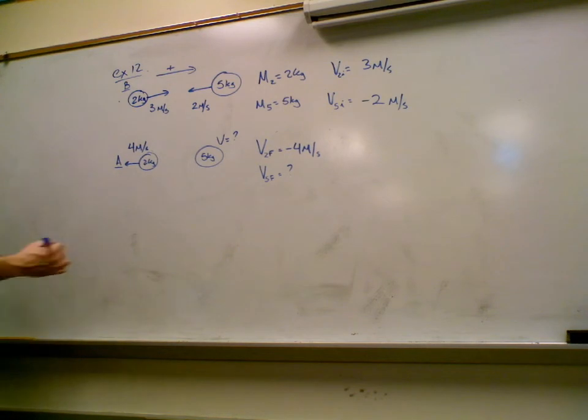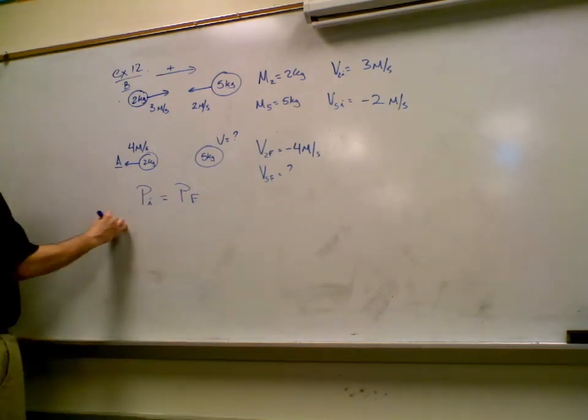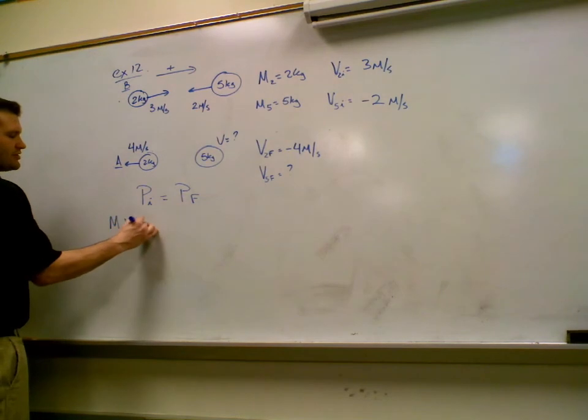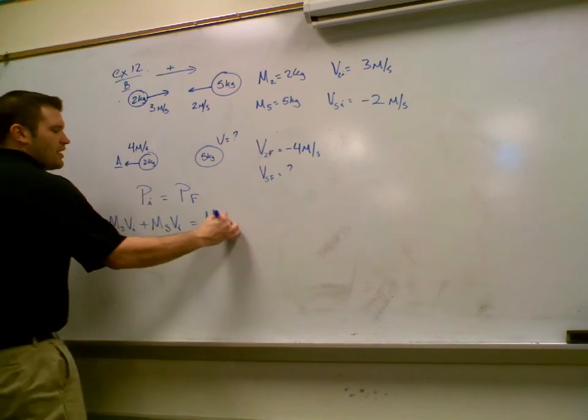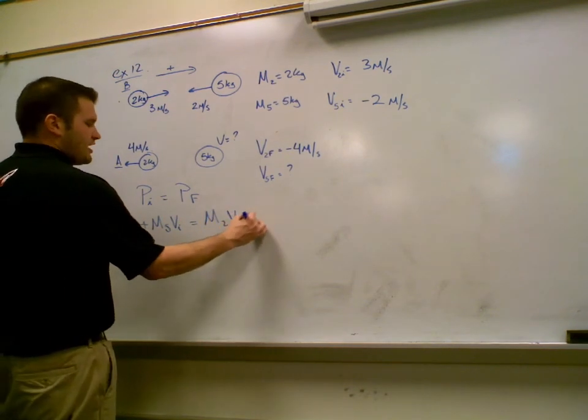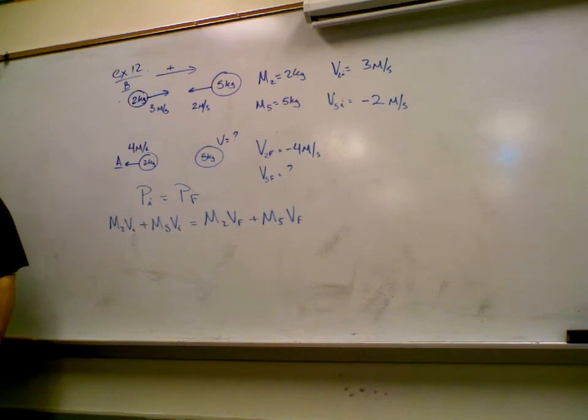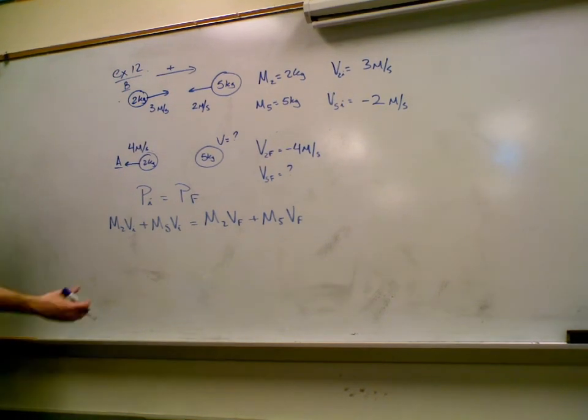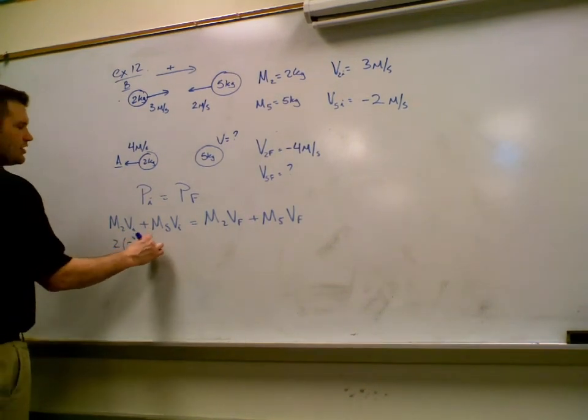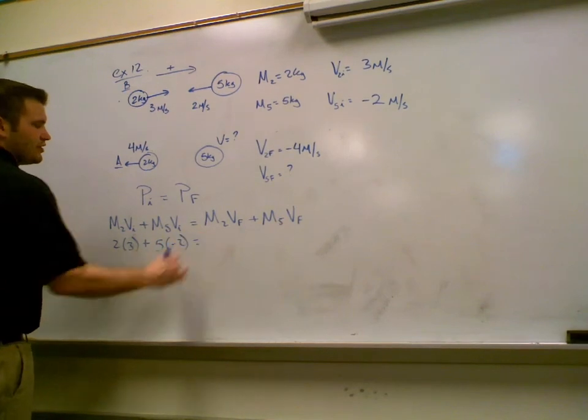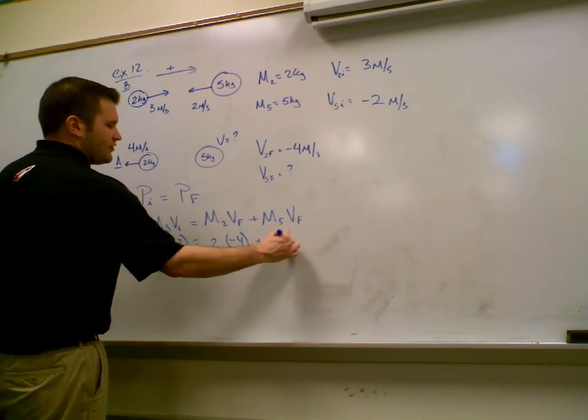Alright. So what's the conservation of momentum tell us? All of our momentum to start equals all of our momentum to end, right? So that means we have the mass and velocity of object 2 plus the mass and velocity of the 5-kilogram object equals the mass and velocity of the 2-kilogram object after, plus the mass and velocity of the 5-kilogram object after. So we can start plugging in what we know. Before, we have 2 times 3 plus 5 times negative 2. After, we have 2 times negative 4 plus 5 times V.